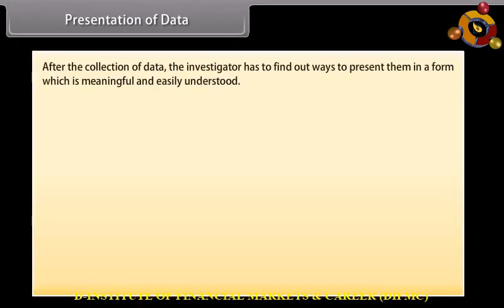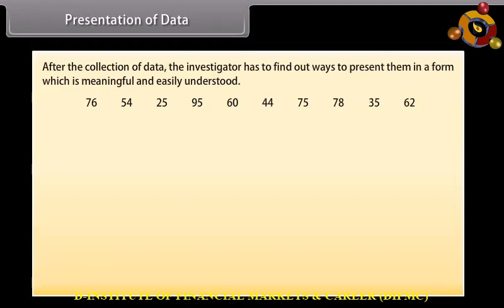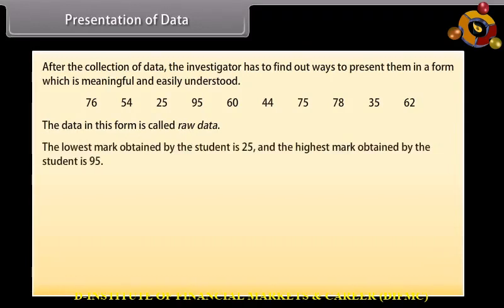Presentation of data: After the collection of data, the investigator has to find ways to present them in a form which is meaningful and easily understood. Let us go through some examples showing various ways of presenting the data. These numbers are the marks obtained by 10 students in science. The data in this form is called raw data. The lowest mark obtained is 25 and the highest mark obtained is 95.